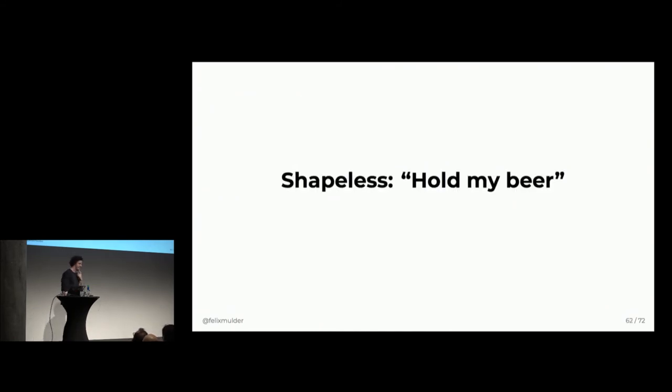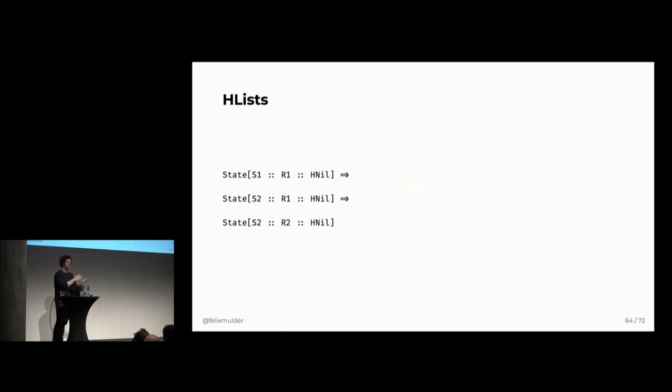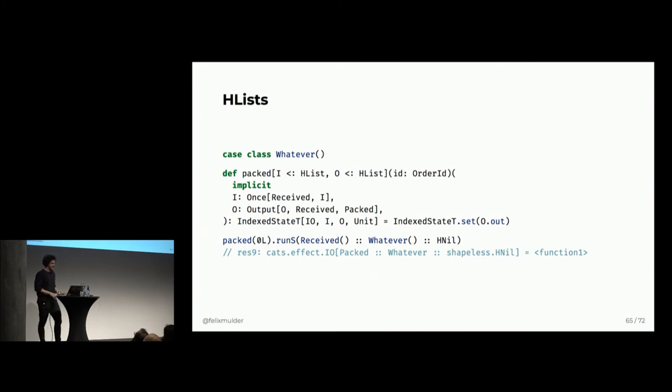Well, Shapeless says, hold my beer. And we'll do this. So, the answer to this problem is HLists. So, what you can do is to say that you want to mutate states individually inside this HList. So, for instance, here, you can see that between the first and second line, the thing that changes is S. So, S goes from S1 to S2. And in the third line, you can see that R1 has transitioned into R2. So, now you can actually, if we could model this somehow, then we could actually have mutation of several different states at once. So, let's create some unrelated case class whatever, and then create a function that does this. So, we actually did a prototype of this. So, it actually works. But we don't dare to put it into production.